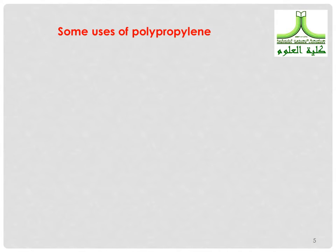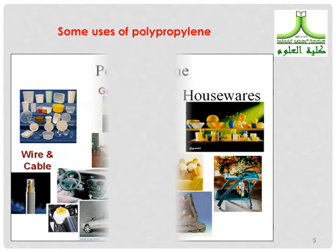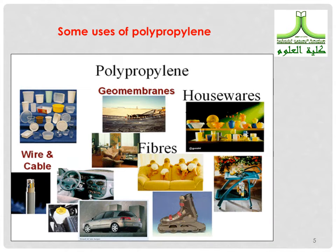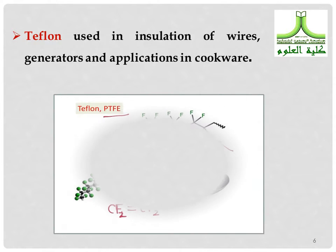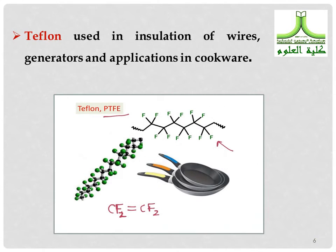Some uses of polypropylene include fibers, wire and cable, and housewares. Teflon is used in insulation of wires, generators, and applications in cookware.